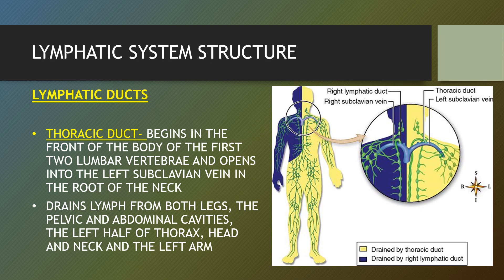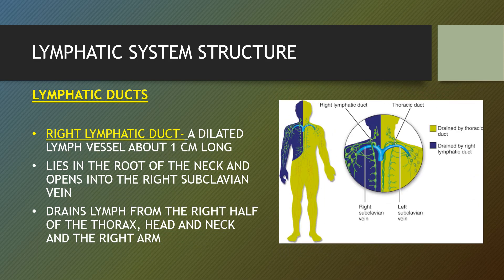The thoracic duct begins at the front of the lumbar vertebrae and opens into the left subclavian vein at the root of the neck. It drains lymph from both legs, the pelvic and abdominal cavities, the left half of the thorax, head and neck, and the left arm. The right lymphatic duct is responsible for draining lymph from the upper right quadrant of the body, including the right side of the head and neck, the right side of the thorax and the right upper limb. It is a dilated lymph vessel about one centimetre long, lying in the root of the neck and opening into the right subclavian vein. These two ducts then empty into the venous circulation at the subclavian veins via the right and left venous angles.